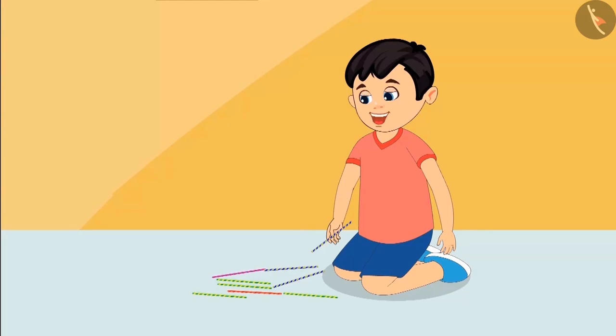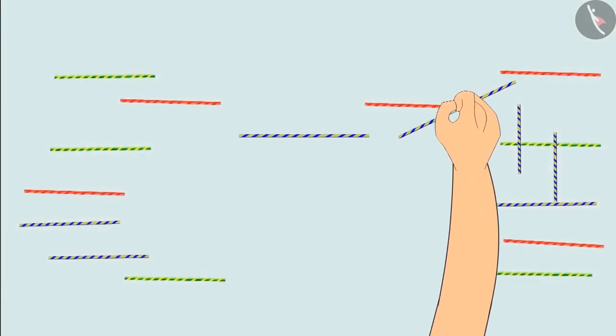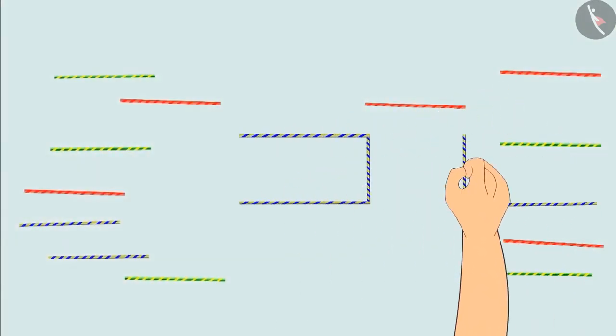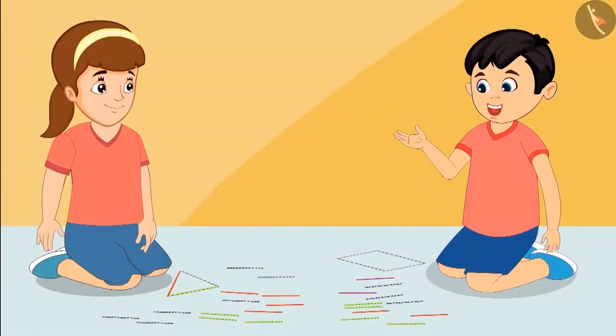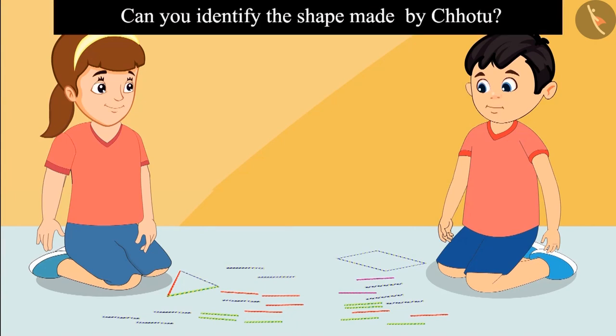Neha, now let me try and you tell me what I have made. Okay Chotu, I made the shape with four straws. So tell me, what is this shape? Children, do you know which shape is this? Come on, let us see.